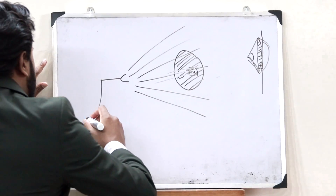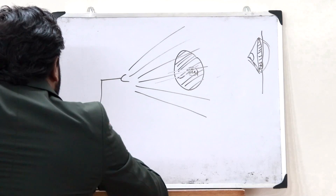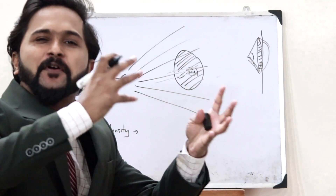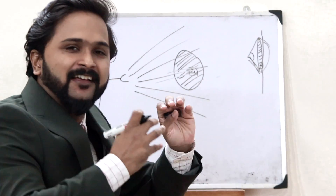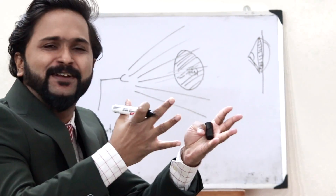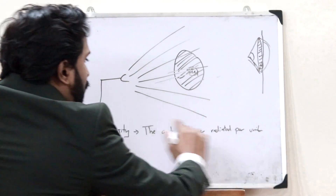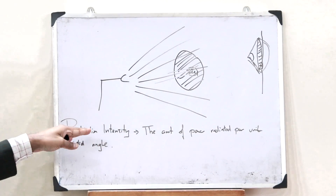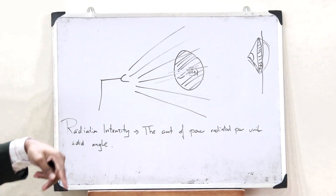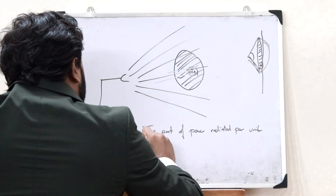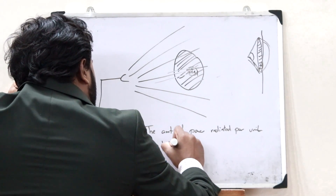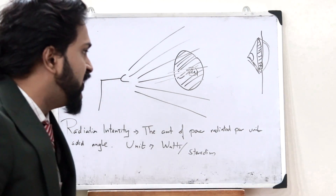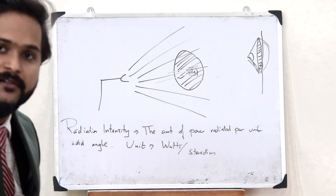Radiation intensity is defined as the amount of power that is radiated per unit solid angle. The unit of radiation intensity is watts per steradian, because watts is the unit for power and steradian is the unit for solid angle.